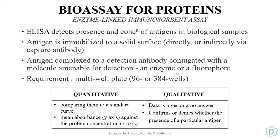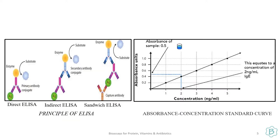The basic requirement for this test is a multi-well plate, wherein you can analyze 96 or 384 samples at the same time. Your results may be qualitative or quantitative — you can detect the concentration as well as the presence or absence of any particular substance. For this you will require an absorbance measuring device which works on Beer-Lambert's law. Depending on the way the antigen is captured, ELISA can be categorized into three different techniques.